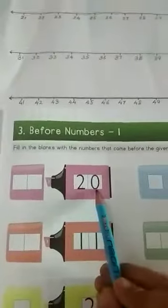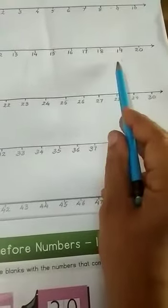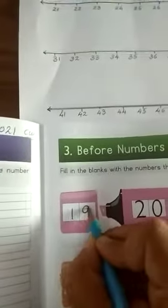See, this is 20. So what will come before 20? Before 20, 19 will come. So write down here. 1, 9, 19.